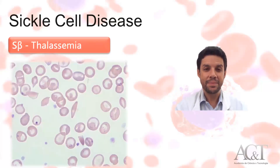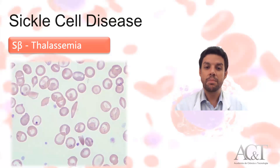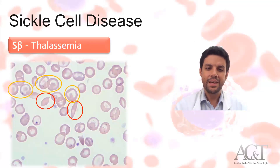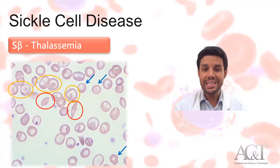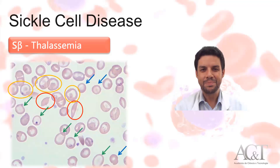And lastly, S-beta thalassemia, which usually shows a more pronounced poikilocytosis with some sickle cells, but also many target cells along with microcytic and hypochromic red blood cells.